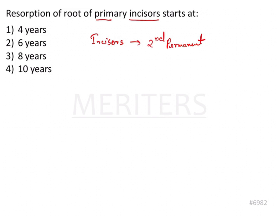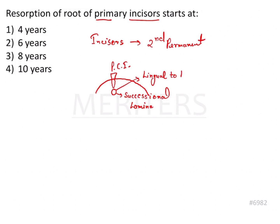If I give you a diagrammatic representation about it — suppose this is a lower arch and we have our primary central incisor here. We have the primary central incisor and the position of the bud which is going to form the successional tooth. This is known as successional lamina, and this successional lamina is situated lingual to the primary teeth. The development of the permanent teeth occurs in a lingual position to the primary or deciduous counterpart.